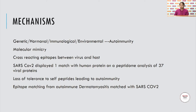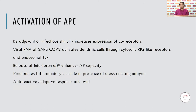Epitope matching has also been demonstrated with SARS-CoV-2 in a dermatomyositis patient. Activation of antigen-presenting cells by adjuvant or infectious stimuli increases the expression of co-receptors. The viral RNA of SARS-CoV-2 activates dendritic cells through cytosolic RIG-like receptors and endosomal toll-like receptors, leading to release of alpha, beta, and gamma interferons, which increases antigen-presenting capacity. This precipitates an inflammatory cascade in the presence of cross-reacting antigens, producing an auto-reactive or adaptive response in COVID.